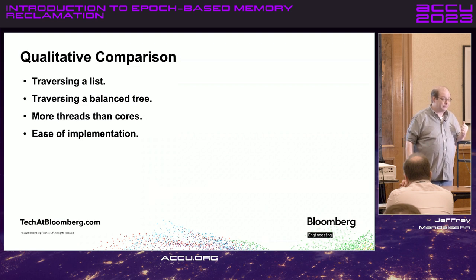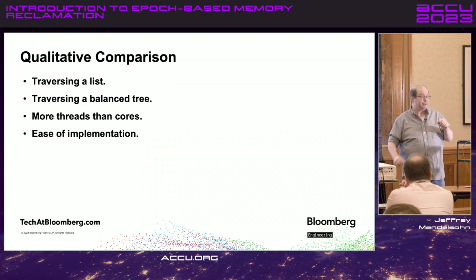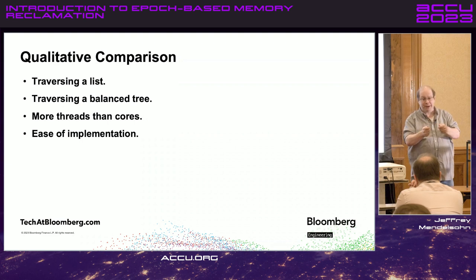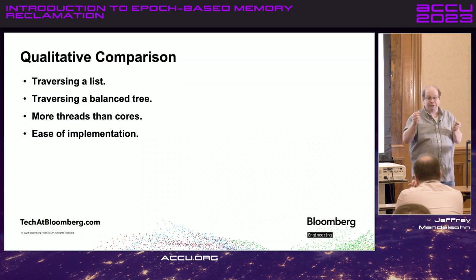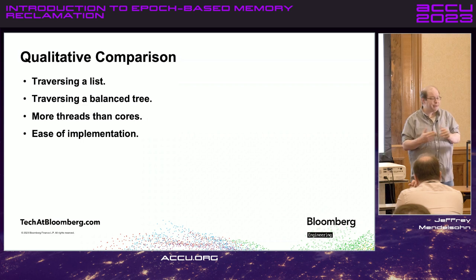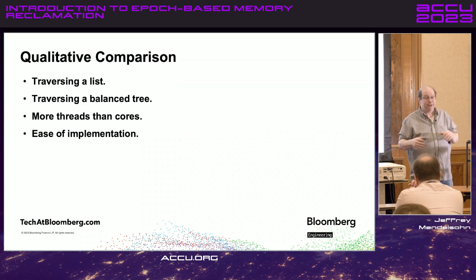Another pro for epoch-based methods is ease of implementation. For hazard pointers on a linked list, you need a careful hand-over-hand algorithm; if you're not familiar with it and naively try to use hazard pointers, you might get it wrong and have an incorrect algorithm. Epoch-based is simpler: a thread enters a method, you do something; it leaves a method, you note that it left, and the mechanism works throughout.